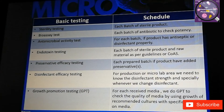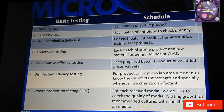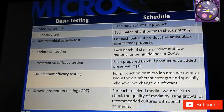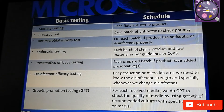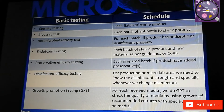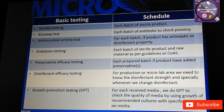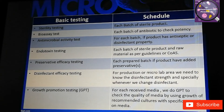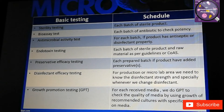Another test is endotoxin testing, where we check the endotoxin of bacteria in sterile products and raw materials used in sterile products. Another is preservative efficacy testing, which checks the effectiveness of preservatives added to a product — we use cultures for this purpose. There is also disinfectant efficacy testing, which checks the effectiveness of disinfectants used in production areas, microbiology labs, or sterile areas.